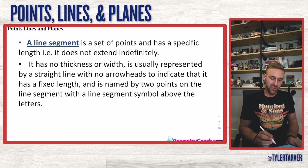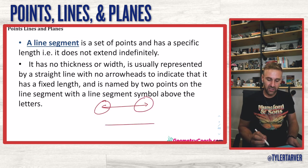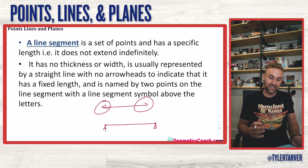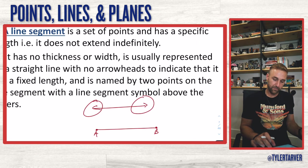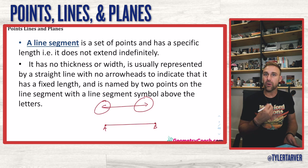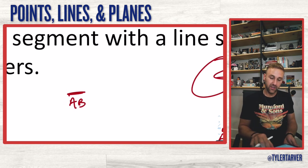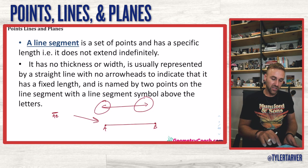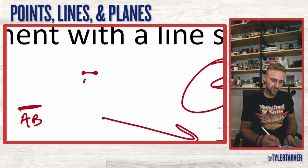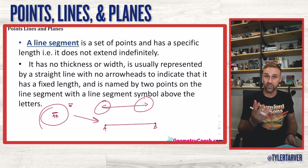A line segment does not have the arrows. So it'd be like line segment AB — that is a line segment. It has no thickness or width, and it's usually represented by a straight line with no arrowheads to indicate that it has a fixed length. When labeling it, you put a line over the letters AB with no arrows.